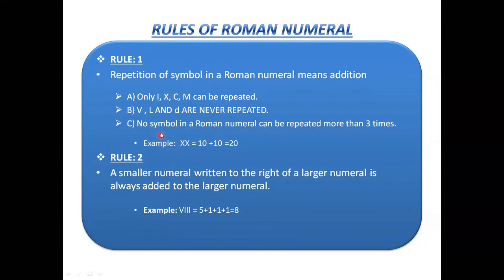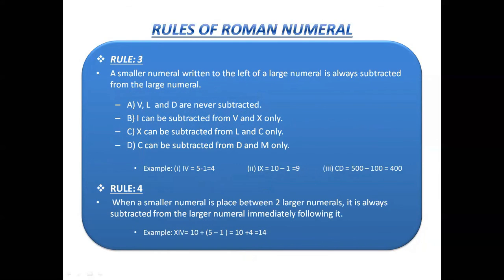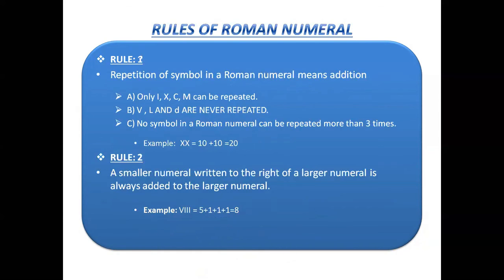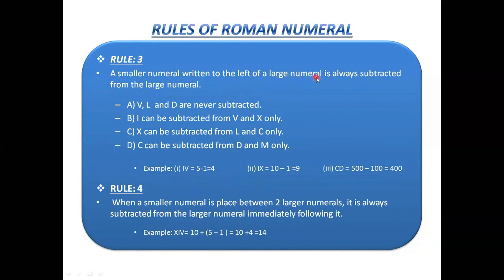Rule 2: a smaller numeral written to the right of a larger numeral is always added to the larger numeral. For example, VIII = 5 + 1 + 1 + 1 = 8. Rule 3: a smaller numeral written to the left of a larger numeral is subtracted. V, L, and D are never subtracted. I can only be subtracted from V and X; X from L and C; C from D and M. For example, IV = 5 − 1 = 4.